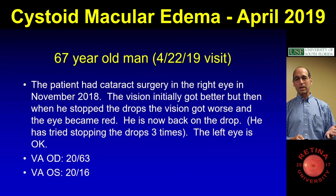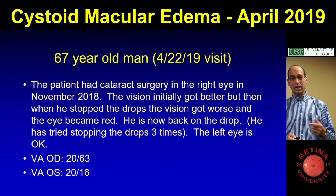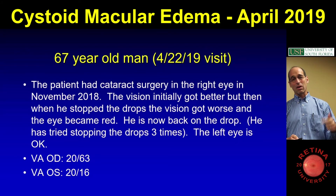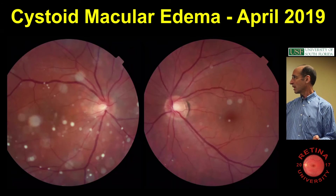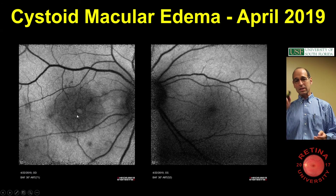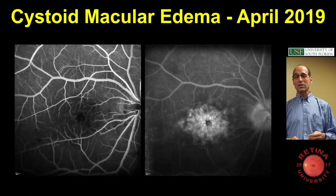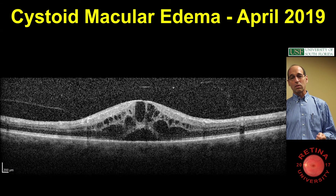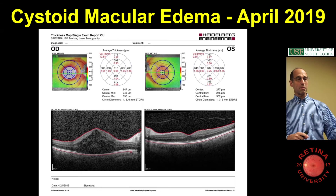This is a typical patient with pseudophakic macular edema — they had cataract surgery. The vision got better, but then they stopped their medicines and it got worse. Back on and off the drops three times, and the vision just kept getting worse to 20/60. There's asteroid hyalosis, but if you look carefully the right eye has macular edema. On autofluorescence you can see the absence of pigment in the center and a sort of petaloid distribution, and the fluorescein shows leakage. The OCT shows a bunch of fluid — a typical pseudophakic macular edema patient.